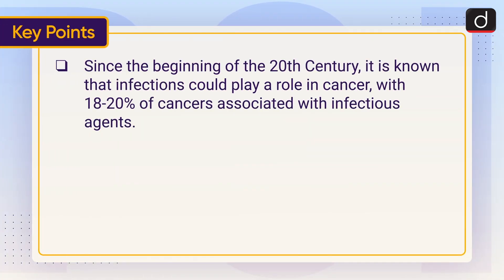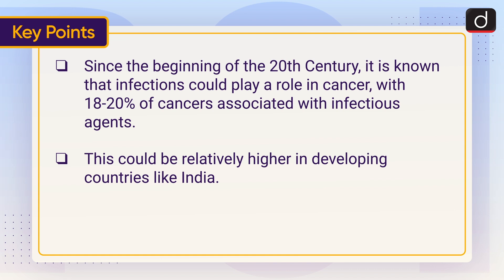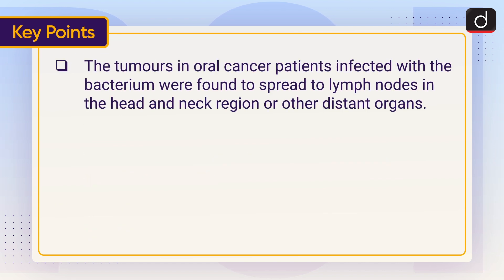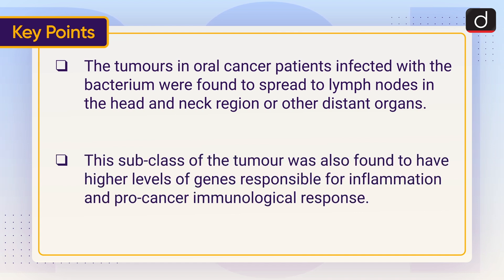Since the beginning of the 20th century, it has been known that infections could play a role in cancer, with 18 to 20 percent of cancers associated with infectious agents. This could be relatively higher in developing countries like India. Interestingly, Fusobacterium nucleatum is known to play a vital role in colorectal cancer. The tumors in oral cancer patients infected with the bacterium were found to spread to lymph nodes in the head and neck region or other distant organs. This subclass of the tumor was also found to have higher levels of genes responsible for inflammation and pro-cancer immunological response.